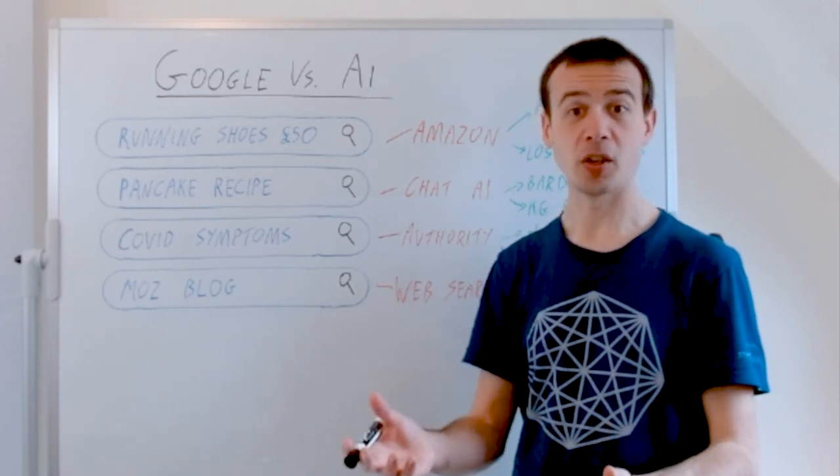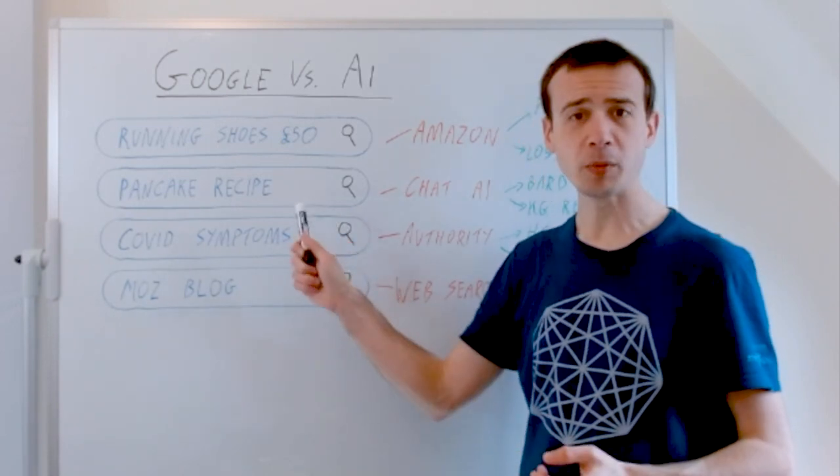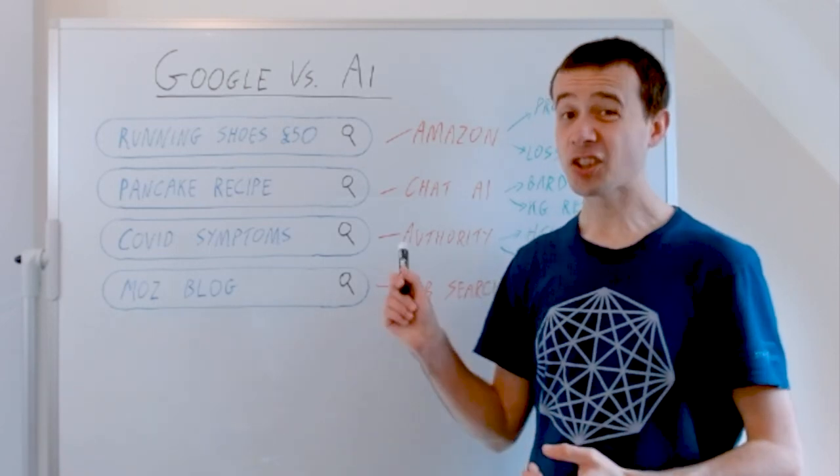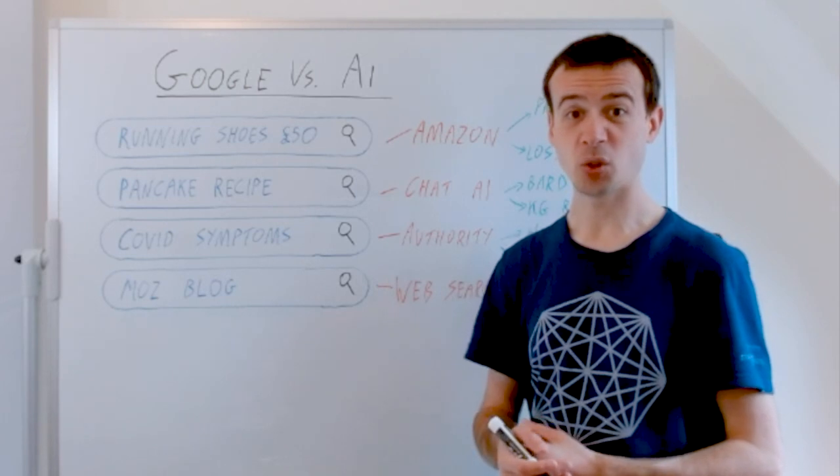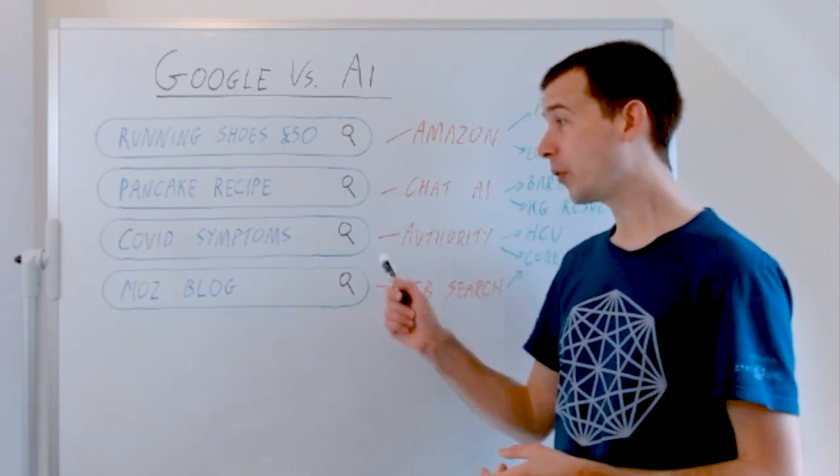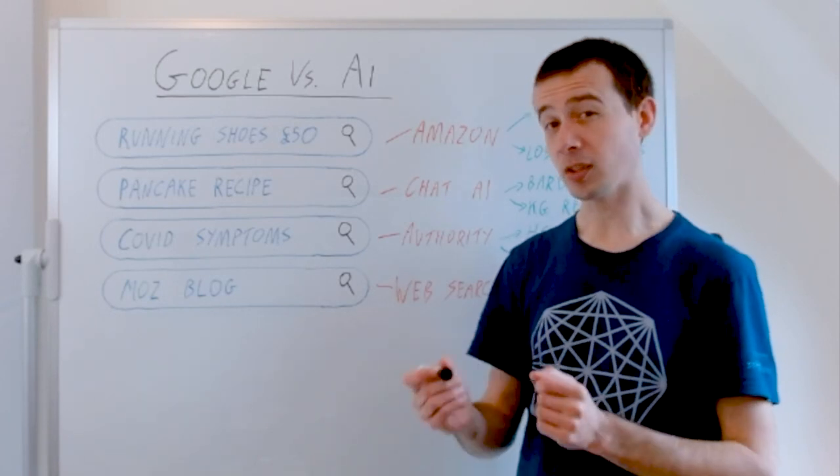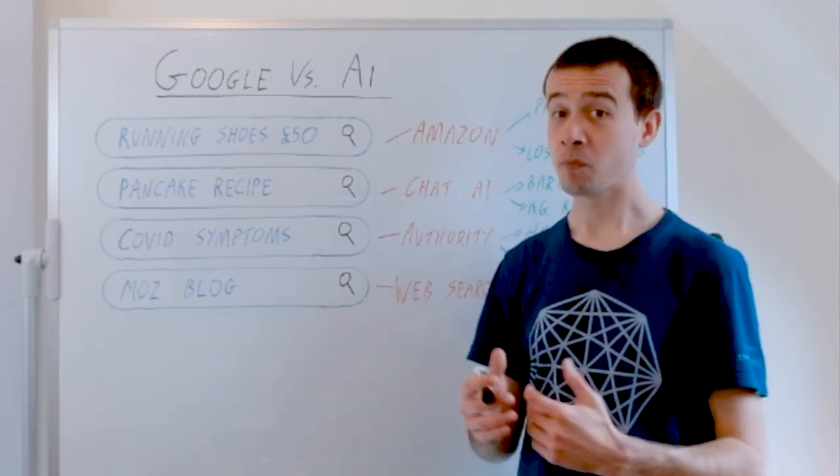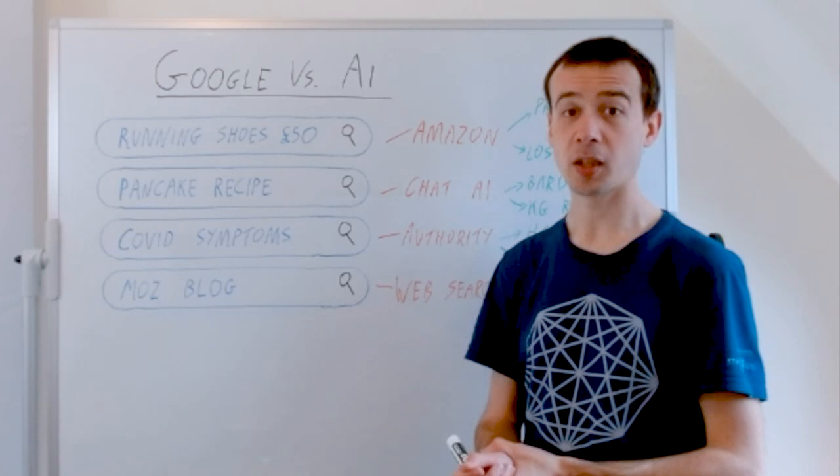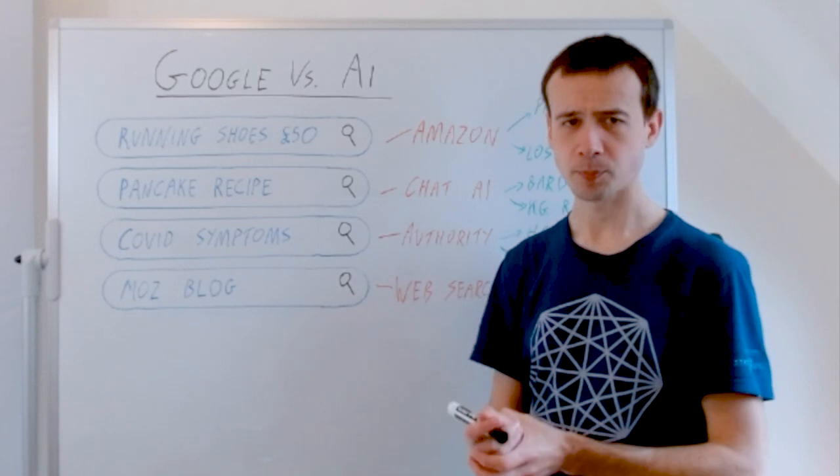Then we've got things like pancake recipes, which are very informational, uncontroversial, where actually a chat AI can do a pretty good job just aggregating all the different recipes that it's consumed in its training set. COVID symptoms is way more authority-sensitive. At the moment, this is kind of a strong point for Google because we actually do trust, as consumers, we trust Google more than we might trust something like an NLP model right now.